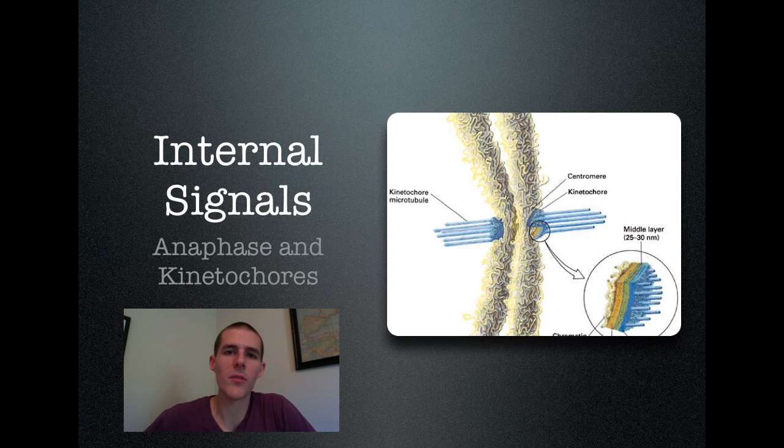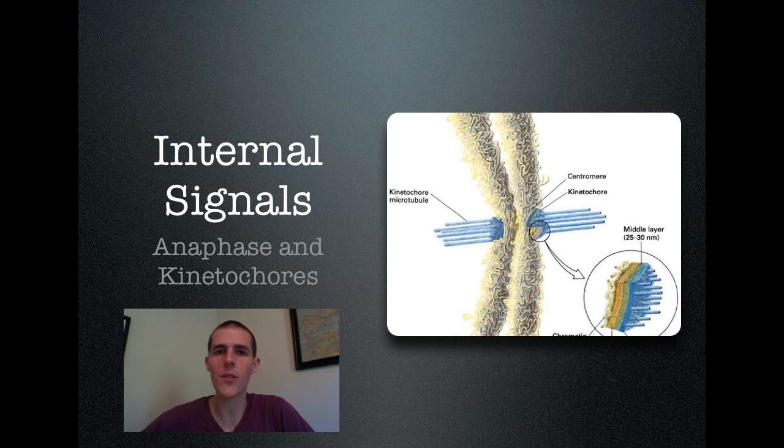Next of our topics we need to talk about is actual control, or some of the mechanisms that control cell division other than CDK and cyclin. So, there are internal signals and there are external signals. An internal signal will be some sort of signal coming from within the cell that says, hey, wait, stop, something's broken, let's not divide. One of the big ones is connected to anaphase and kinetochores.